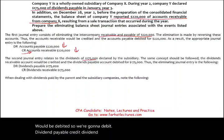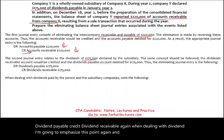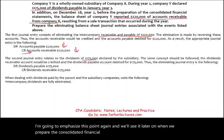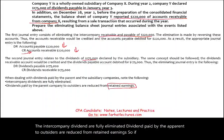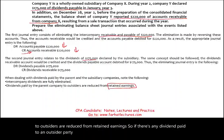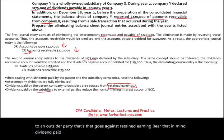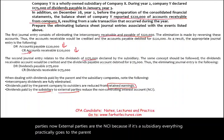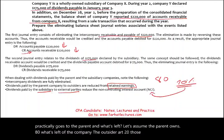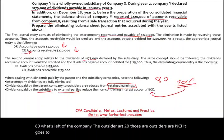When dealing with dividends, the intercompany dividends are fully eliminated. Dividends paid by the parent to outsiders are reduced from retained earnings. Dividends paid by the subsidiary to external parties — the external parties in this case being the NCI — go to reduce NCI. For example, if the parent owns 80%, the remaining 20% are the non-controlling interest, and dividends to that 20% reduce NCI.